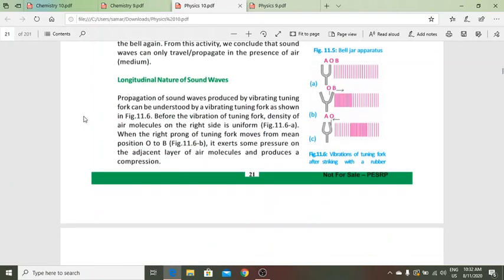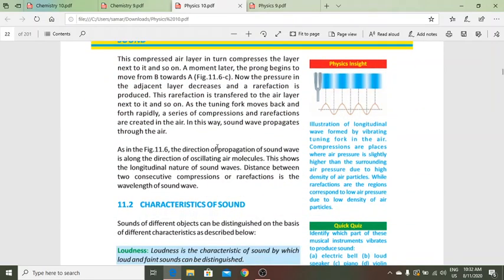Longitudinal nature of sound waves. Propagation of sound waves produced by vibrating tuning fork can be understood by studying its motion. Before vibration, the density of air molecules is uniform. When the prong moves from the mean position O to B, it exerts pressure on air molecules and compressions are produced. A moment later, the prong begins to move from B towards A. This way, the pressure decreases and rarefaction is produced. This way, the compressions and rarefactions propagate in air and the sound waves travel.